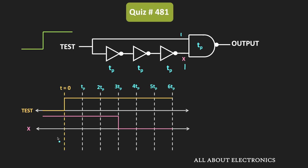So the x input waveform looks like that. Based on these two inputs, we can find the output signal. Initially when the test input is 0, the output will be equal to 1, because for the NAND gate, when any one of the inputs is 0, its output will be equal to 1.